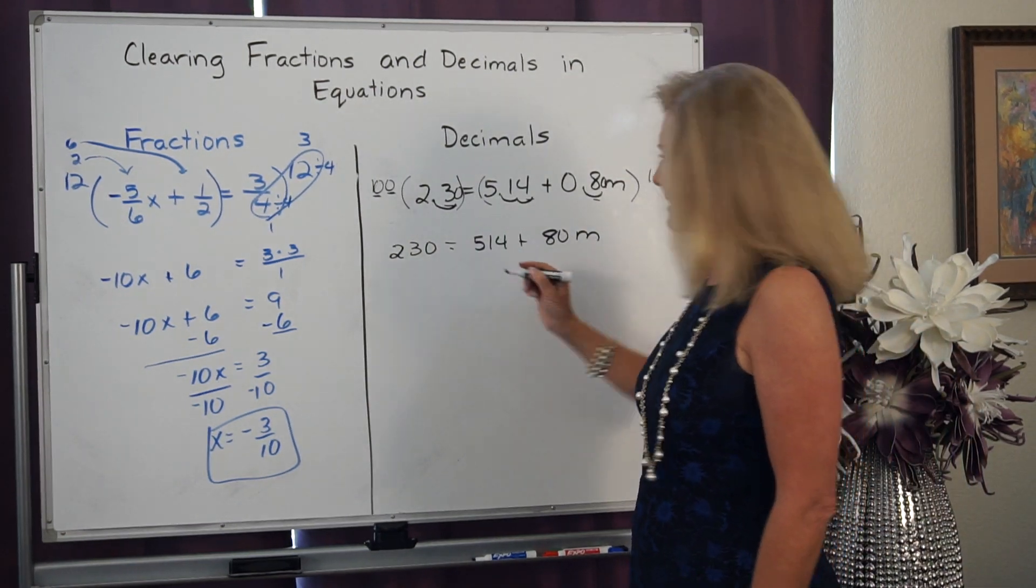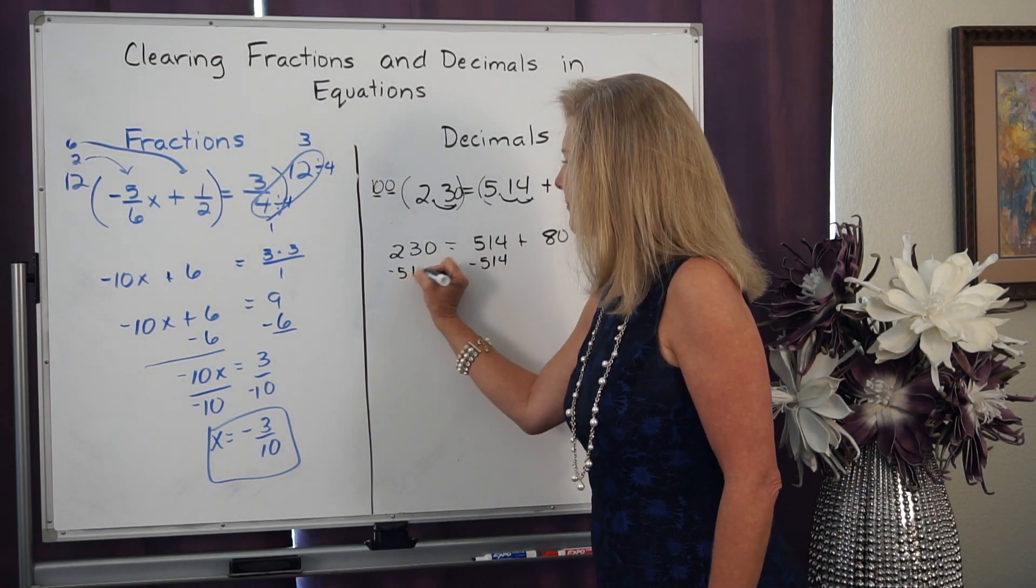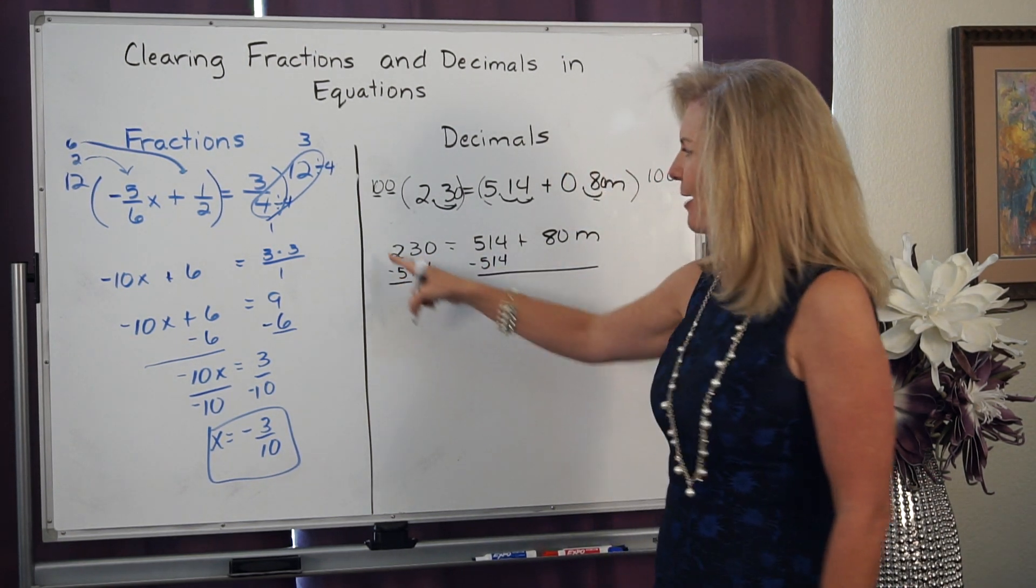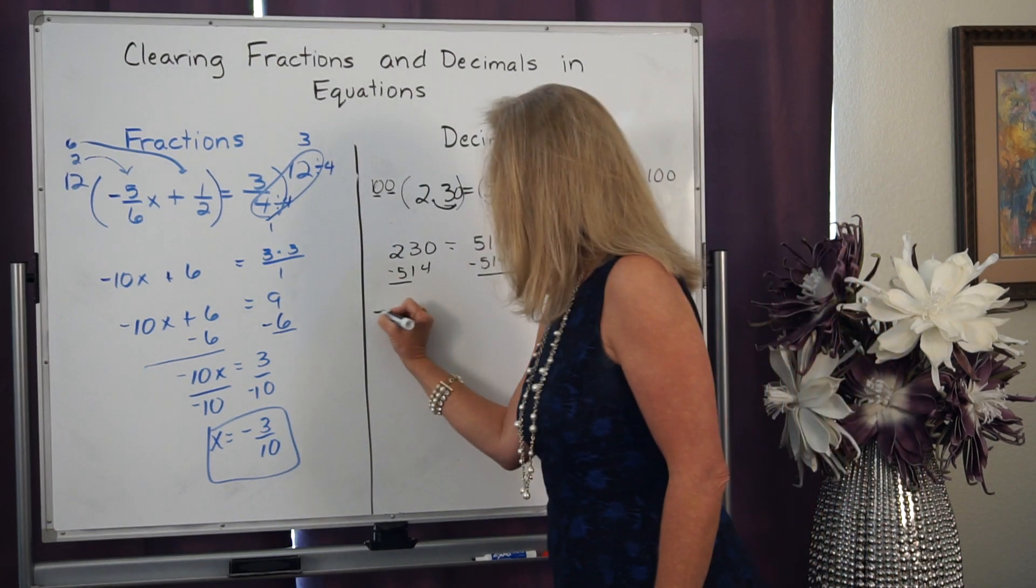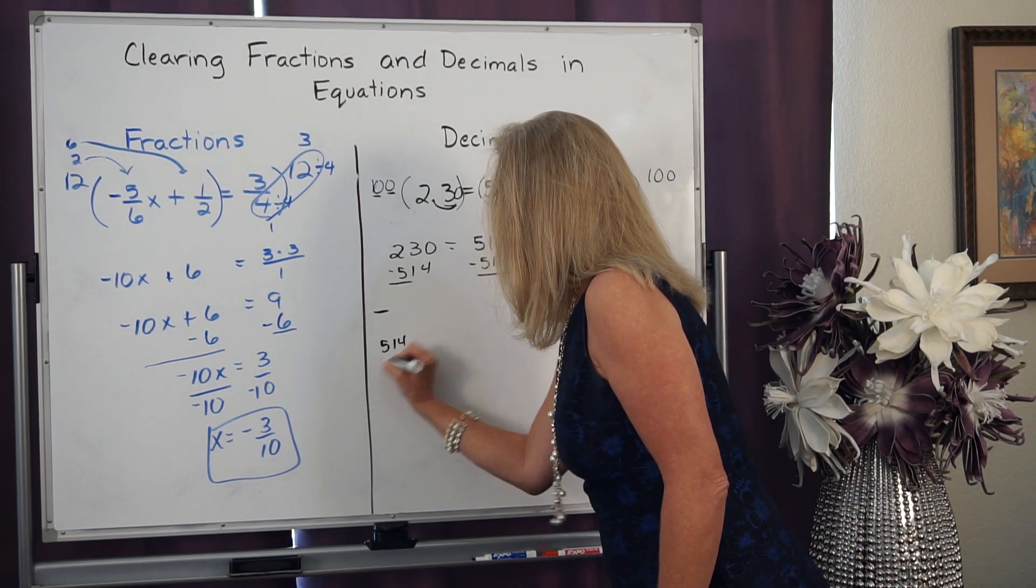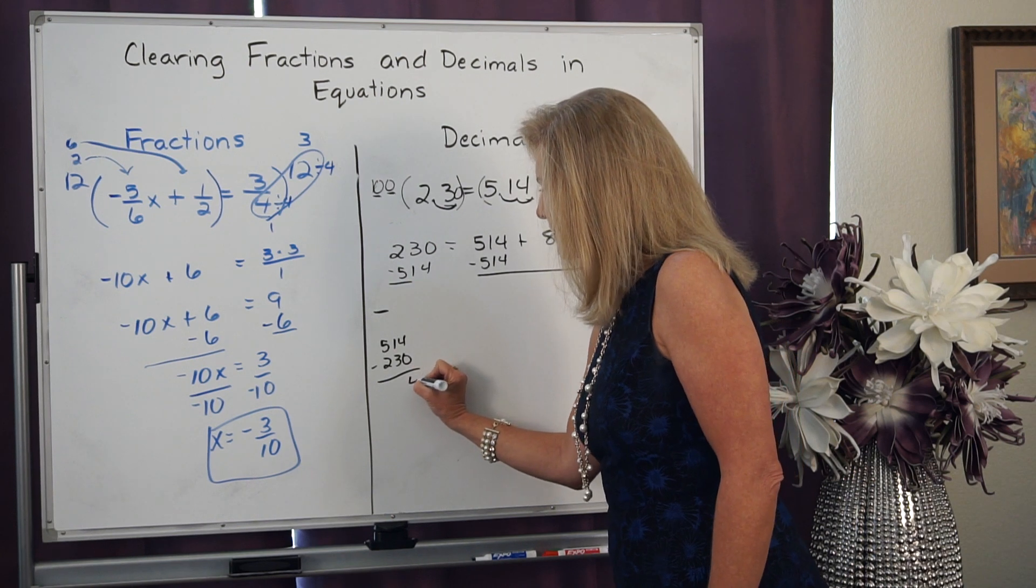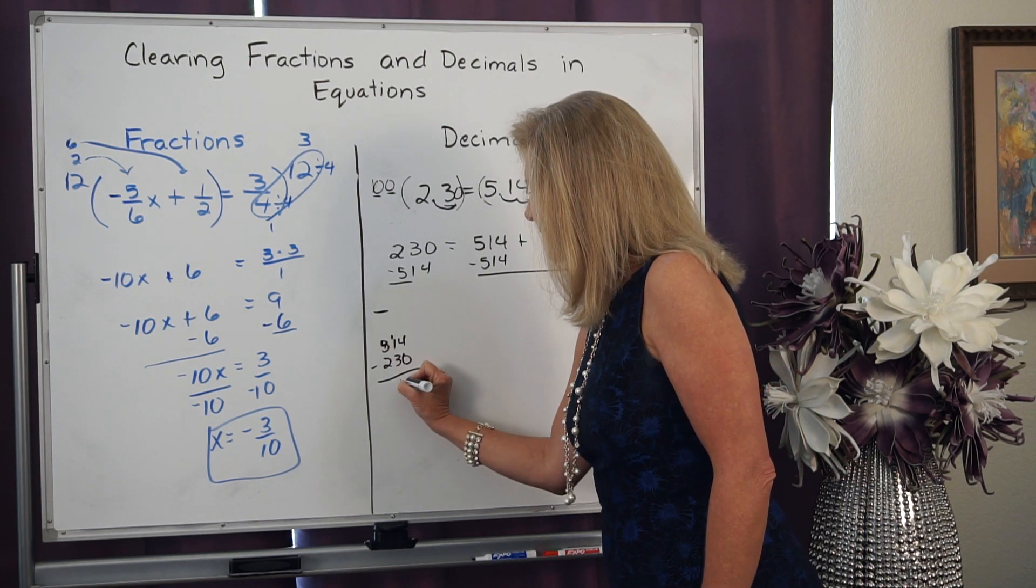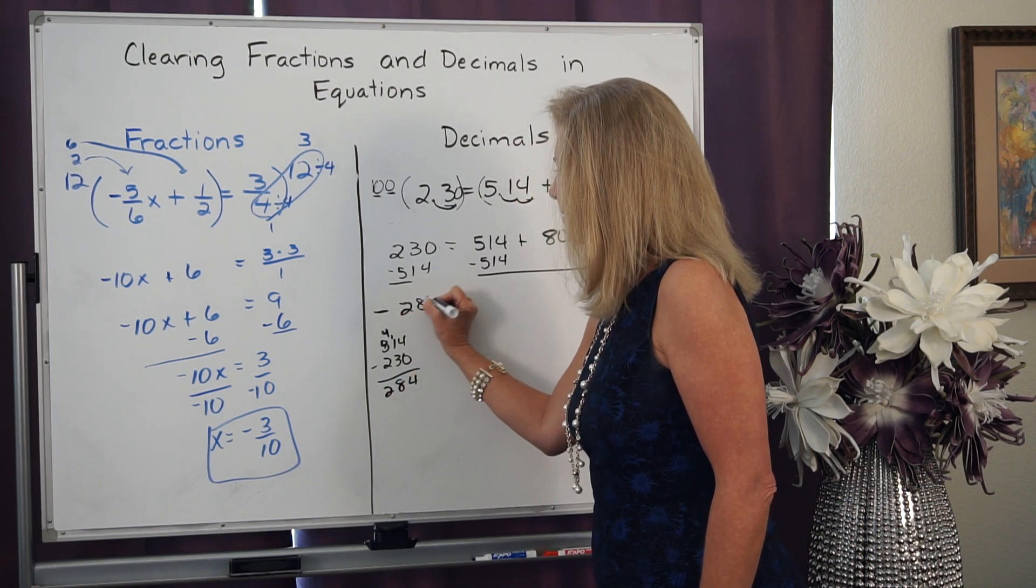So I'm going to start on the side that has the variable. I'm going to subtract 514 from both sides. Now, I have a positive and a negative, but I have far more negatives. So I know my answer is going to be a negative. And if I take 514 and subtract 230 from it, 4 minus 0 is 4, 11 minus 3 is 8, 4 minus 2 is 2. I get negative 284.